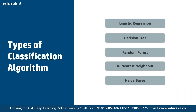In terms of types of classification algorithms, we have logistic regression, decision tree, random forest, K-nearest neighbors, and Naive Bayes. Now let's understand random forest.